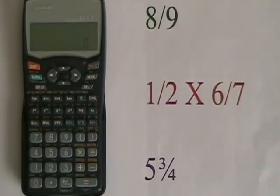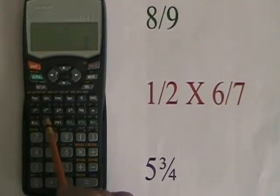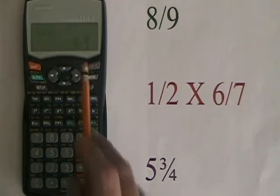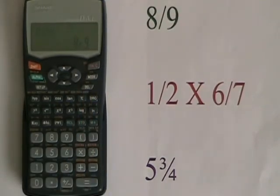Let's start by entering the fraction 8 ninths. We do 8, ABC, 9. If I hit equals, I can see this is what 8 ninths looks like in this calculator.